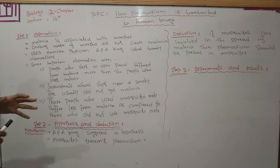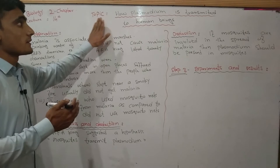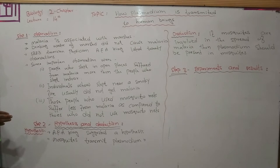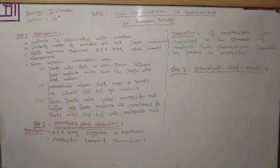The next biological problem, biological problem number 2: how plasmodium is transmitted to human beings. For the first biological problem, what is the cause of malaria? Scientists used biological methods and found that malaria is caused by plasmodium, and the vector is the mosquito, which transmits the disease. Now, the second biological problem: how plasmodium is transmitted to human beings.